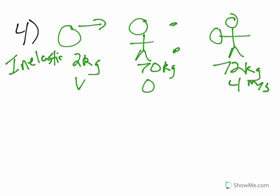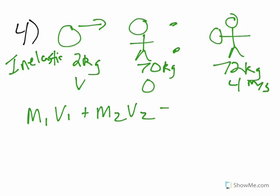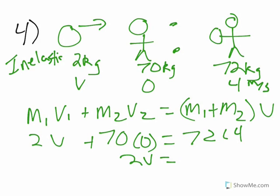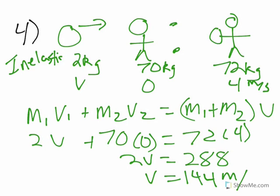We're looking for the initial speed of the ball. We use the inelastic formula: M1V1 plus M2V2 equals M1 plus M2 times V. We get 72 times 4 equals 70 times 0 plus 2V, so 2V equals 288, and the initial velocity of the ball is 144 meters per second.